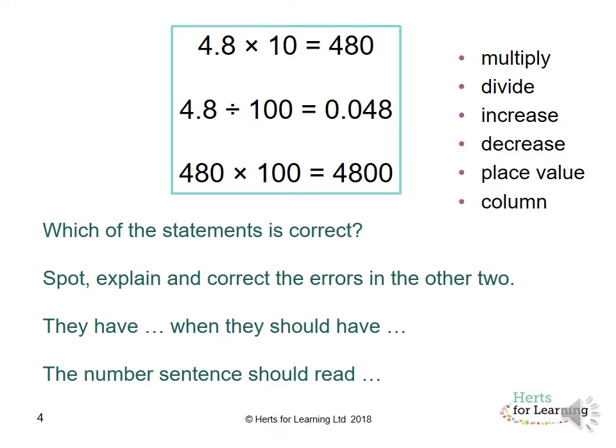The incorrect are the other two. 4.8 times 10. Then you would have to move it one place because you know there's one zero to the left. And then it should be, not zero point, it should be 48. And the answer here is 480.